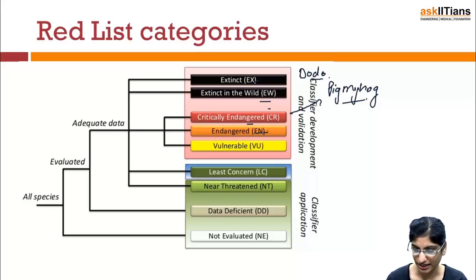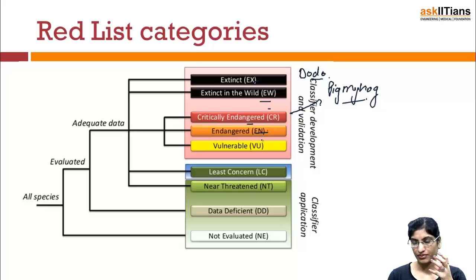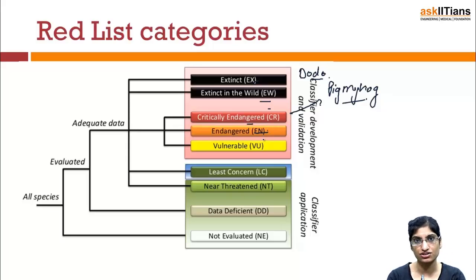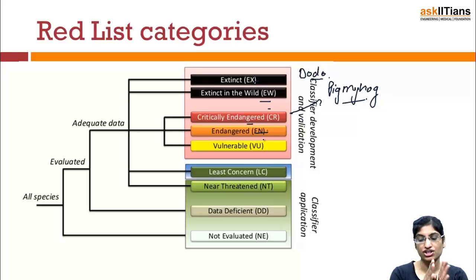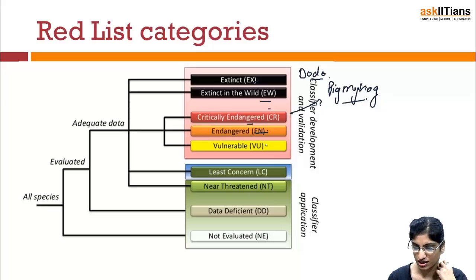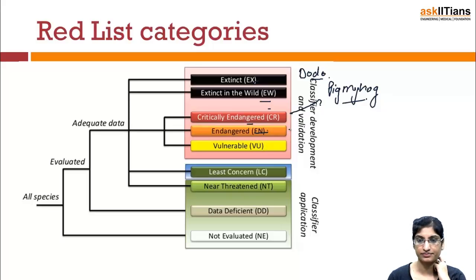Next is Endangered. Endangered means less critical than critically endangered, but the taxon is facing a very high risk of extinction in the wild in the near future. An example of an endangered species is the Red Panda.